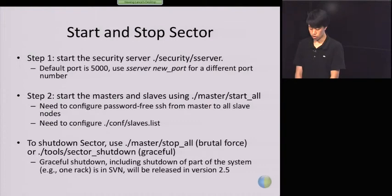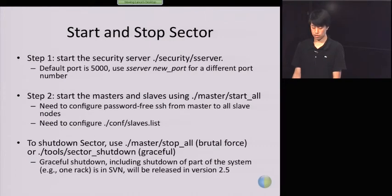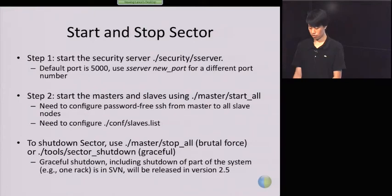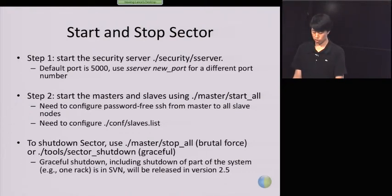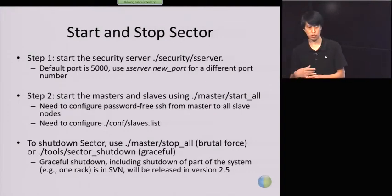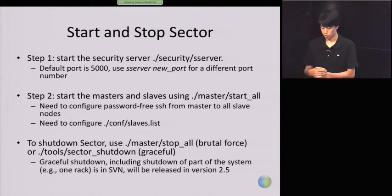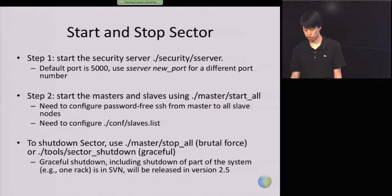After you configure all of this, there are three steps to start the system. First, you start the security server — by default it listens at port 5000, but you can specify a different port as long as you specify it in the master configuration file. Then you can use the start_all command to start the whole system. The master uses SSH to reach each slave and start the slave server, which is similar to Hadoop. You need passwordless SSH set up, and you just put all the slave addresses in a file — the master will automatically start all the slaves on that list.